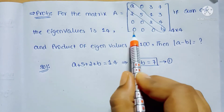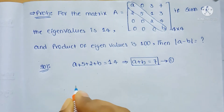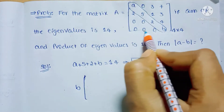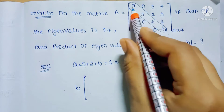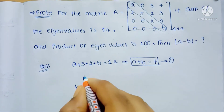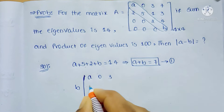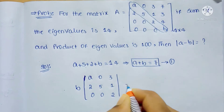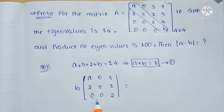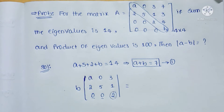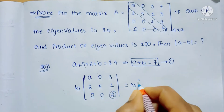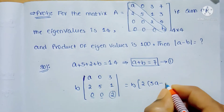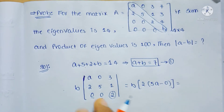Here we have three zeros, so I am taking this row. Using cofactor expansion along that row, I cancel this row and this column, then we get the determinant of the remaining submatrix. From there, expanding further using the row with two zeros, we get 2 into 5 into A, which gives 5A, minus 2 into 0, which is 0. This equals the product of the eigenvalues.